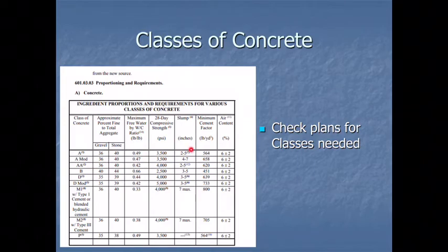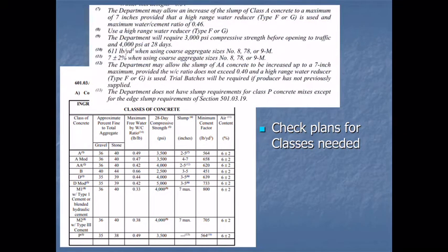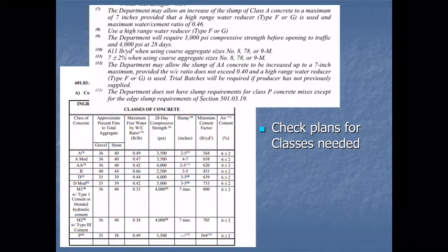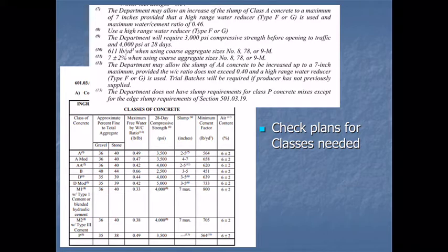Notes 7 and 12 in the spec book are similar, just adapted for each class. With the addition of a high range water reducer, we can go up to a 7 inch slump. This is used when there's high congestion of steel or a small area where vibration is minimal, allowing a higher slump mix for better uniformity.